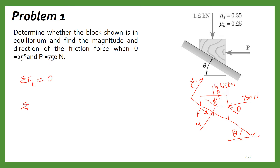According to equilibrium, summation of Fx will be 0 and summation of Fy will be 0. In the x direction we have W sin theta, and this P force will act in the opposite direction so we have minus 750 cos theta, plus the frictional force f, all equal to 0.